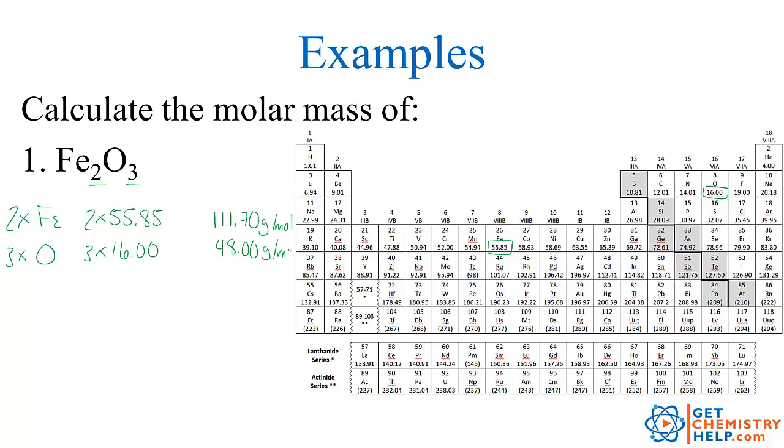Now you'll notice here in terms of significant digits with molar mass we typically just give the total as many decimals as the original number had. So iron had two decimals so when I add up all the irons I give it two decimals. Oxygen had two decimals so when I add them all up or multiply them out I give it two decimals.